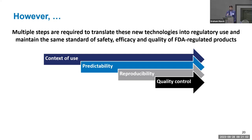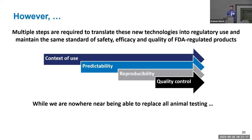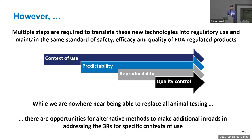You'll hear more about context of use from Jeff Siegel in the next talk. We need predictable models, reproducible models, and quality control — and they need to be for contexts of use that are useful in drug development and evaluation. We're nowhere near being able to replace all animal testing, but there are opportunities for alternative methods to address the Three Rs: replacing, reducing, and refining animal testing for specific contexts of use.